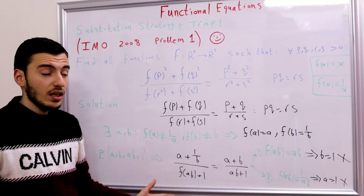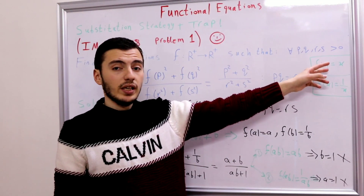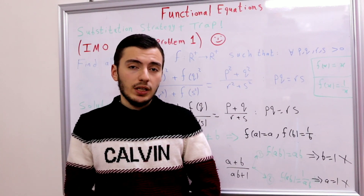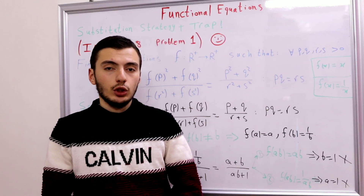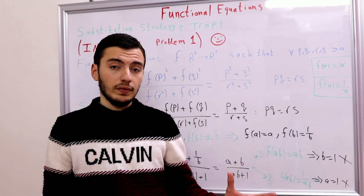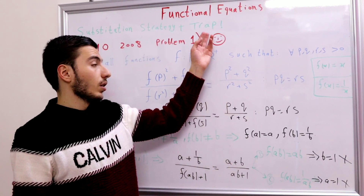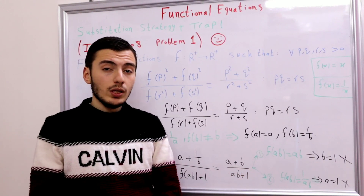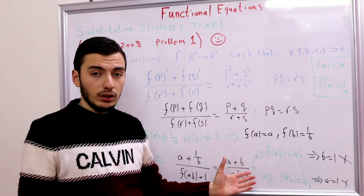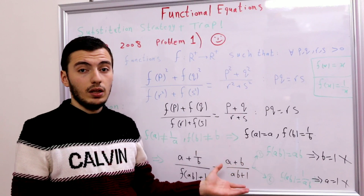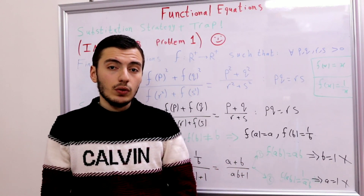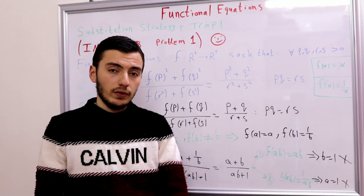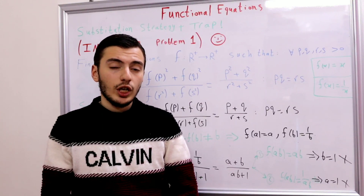Therefore the only solutions are f(x) = x for all x, or f(x) = 1/x for all x. The moral of this problem: first, the substitution strategy is very powerful for solving Olympiad functional equations. Second, don't fall into the trap — when a function could take multiple forms pointwise, always rule out mixed cases explicitly. In the next videos we'll discuss bijective, surjective, and injective function strategies. Please like, share, and subscribe!